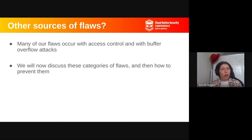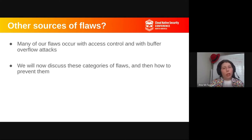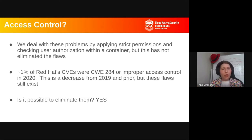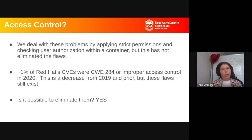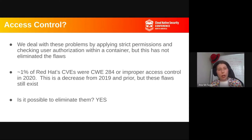Let's think about some of our sources of flaws and CVEs. Many of our flaws occur with access control and buffer overflow attacks. Access control: we deal with a lot of this by applying permissions, checking user authorization, making sure key management is set up. It hasn't eliminated the flaws. It has decreased the number down to about 1% under CWE 284 — improper access control — in 2020, a decrease from prior years. But these flaws still exist.